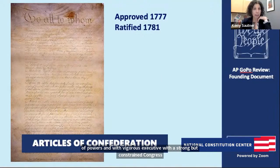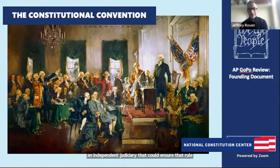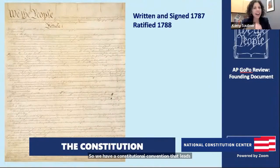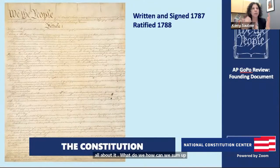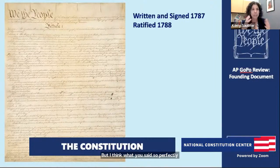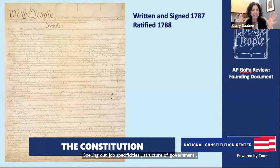The Articles weren't working, so we had a Constitutional Convention that led to the Constitution. How can we sum up the Constitution? What you said so perfectly is that it's a government that gives power, but also limits power and separates power. It spells out jobs, specificities, and structure of government, and also limits on government. When we talk about the original or structural constitution, that's the big idea.